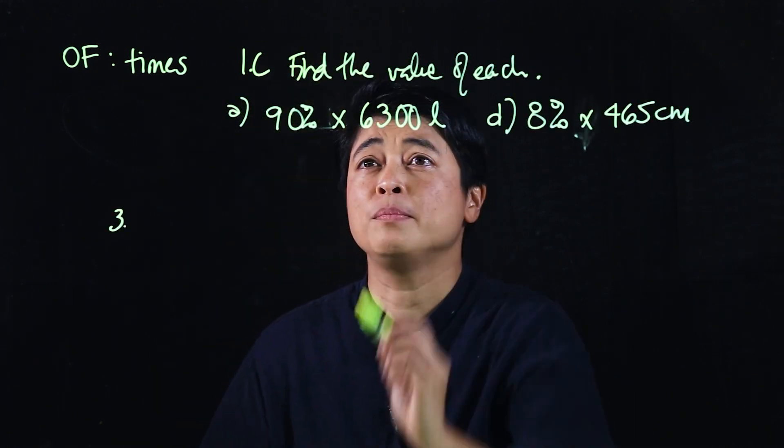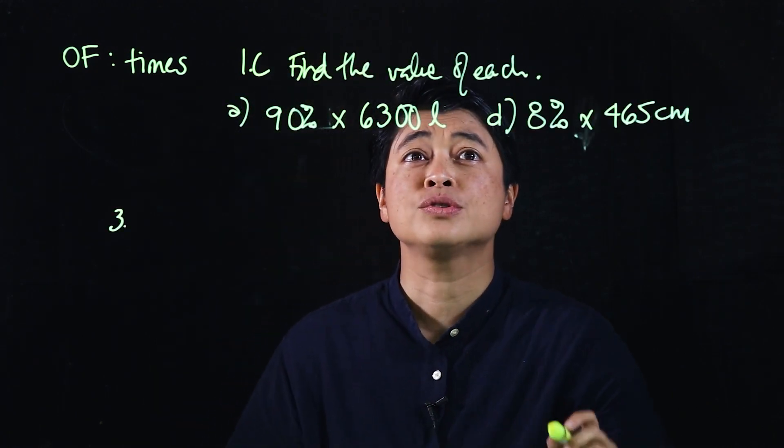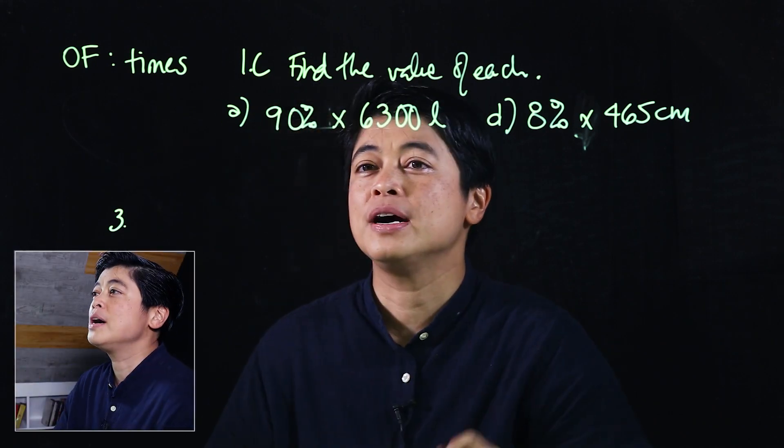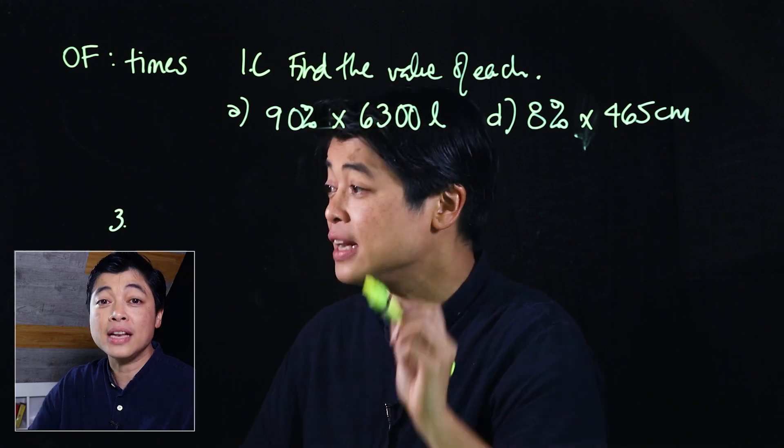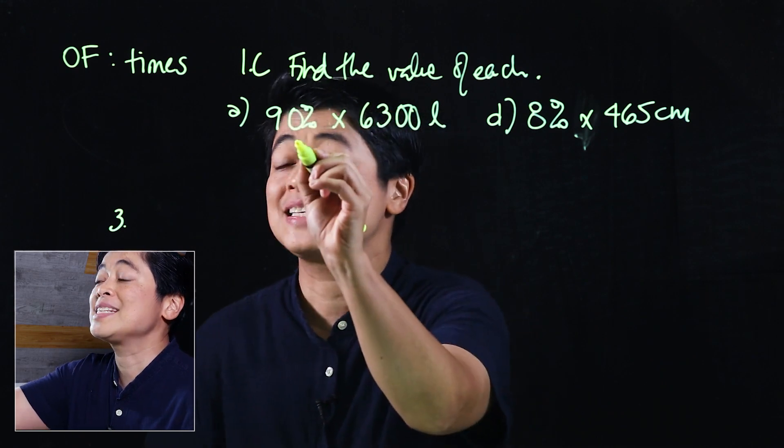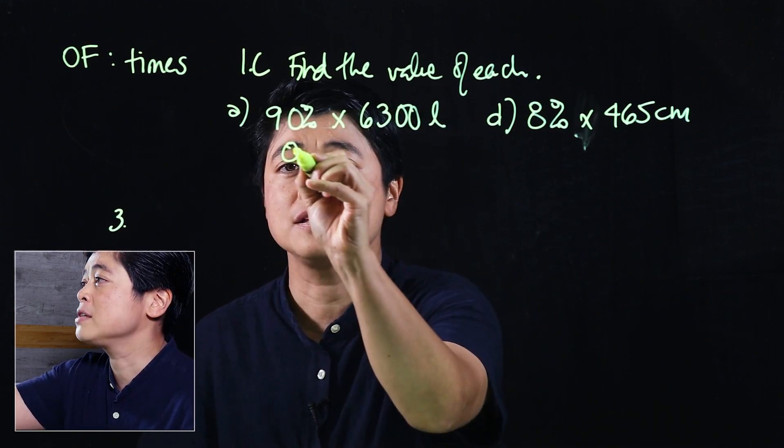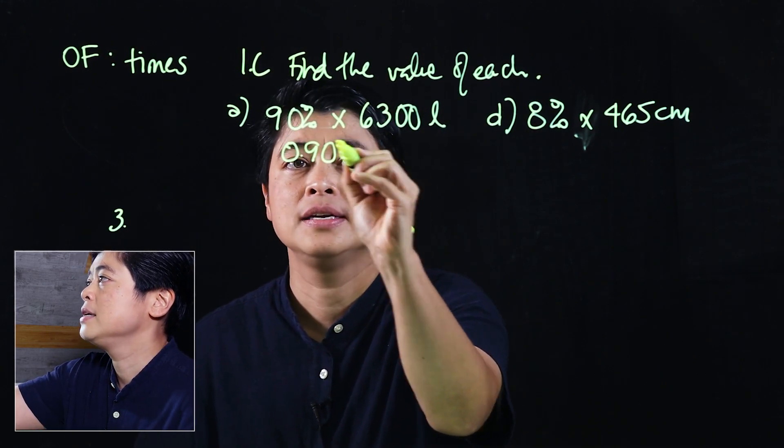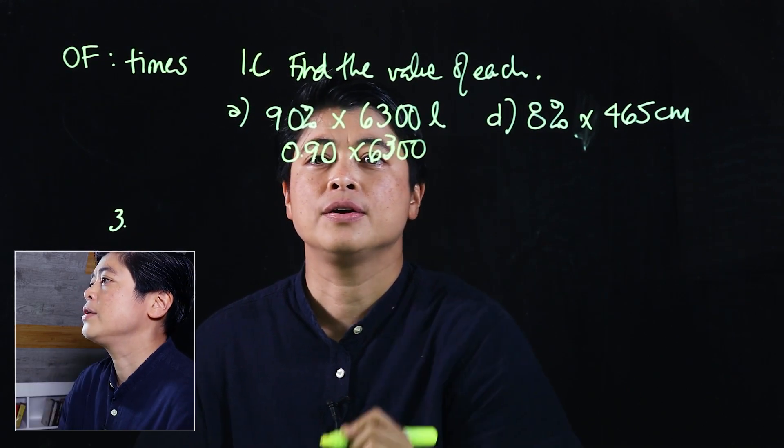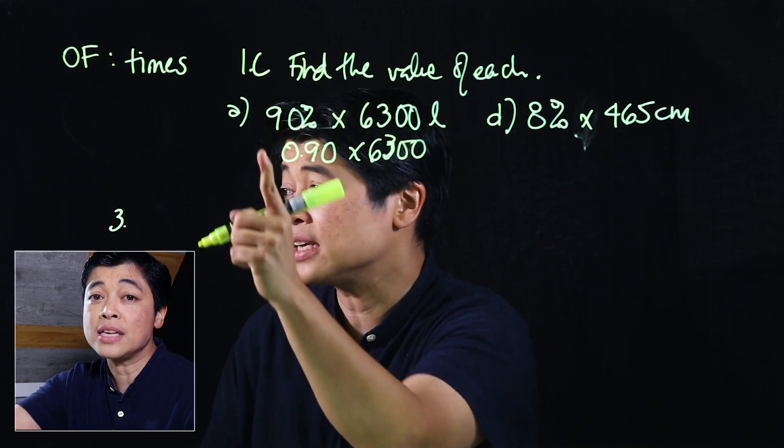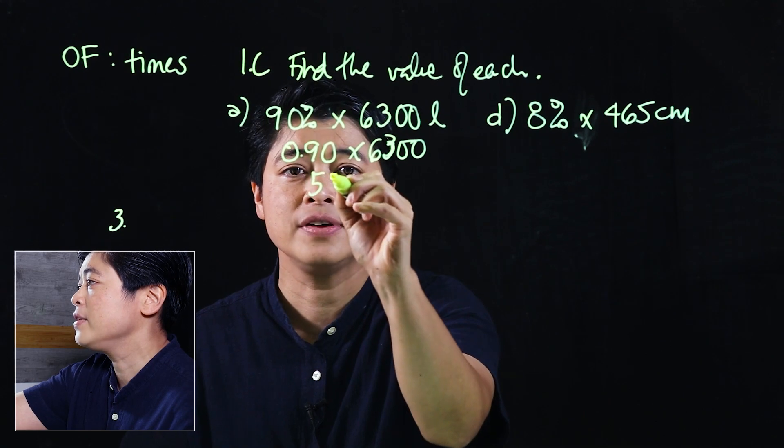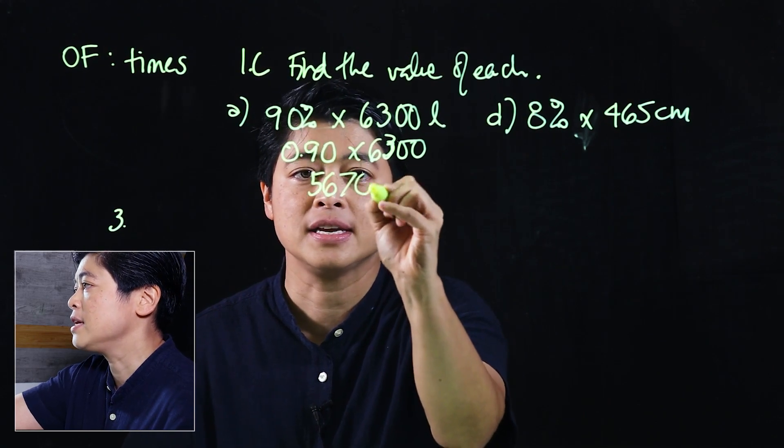Looking at these problems, it says find the values of each. This problem actually has a calculator, so I'm going to show how to do it with a calculator and how to do it if it's mental. Since it's calculator, I said it's best to put it as decimal times 6,300. We need to move two decimal places, and when we put that in the calculator, we should get 5,670.